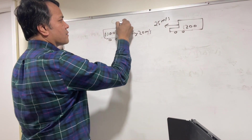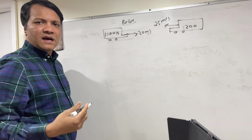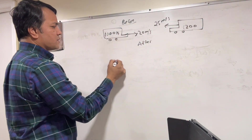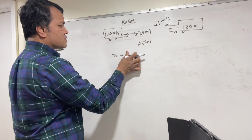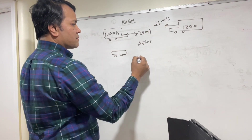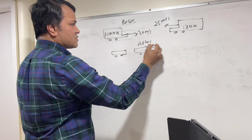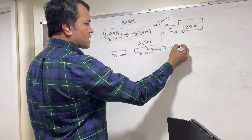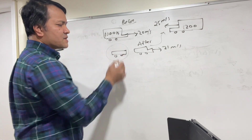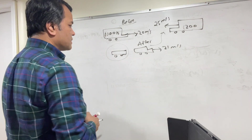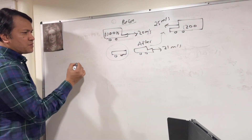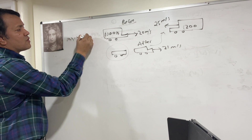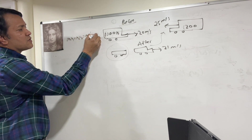After the collision, we don't know which direction car 1 moves, but car 2 changes direction and moves at 21 m/s. We want to find the velocity of car 1 after the collision. Using: M1×V1 + M2×V2 = M1×V1' + M2×V2'.